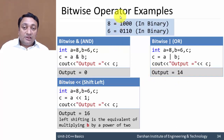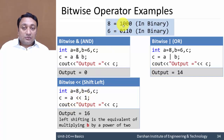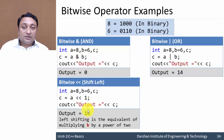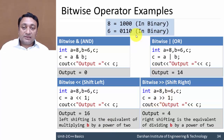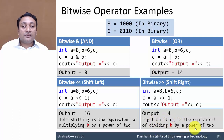Bitwise shift left shifts all bits to the left. Applying a left shift by one bit to a (which is 8) shifts its four bits left by one position, generating output 16. So left shifting is equivalent to multiplying by a power of 2. Conversely, bitwise shift right — shifting right by one position — returns output 4, so right shifting is equivalent to dividing by a power of 2.